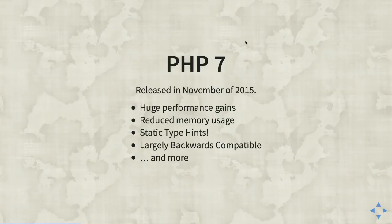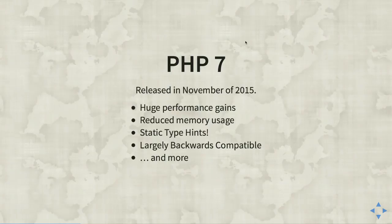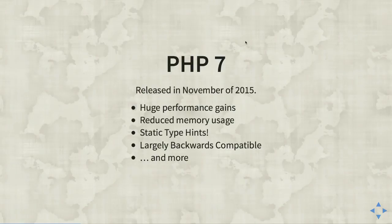PHP 7 added static type hints, which are huge for writing more expressive and easier-to-test code. The compiler or your IDE can give hints about whether you're passing the right types or do the translation for you. It's largely backwards compatible. There's a lot of cool stuff in PHP 7 beyond just performance improvements — I'll assume you saw Larry's talk about the new PHP or will watch it online.